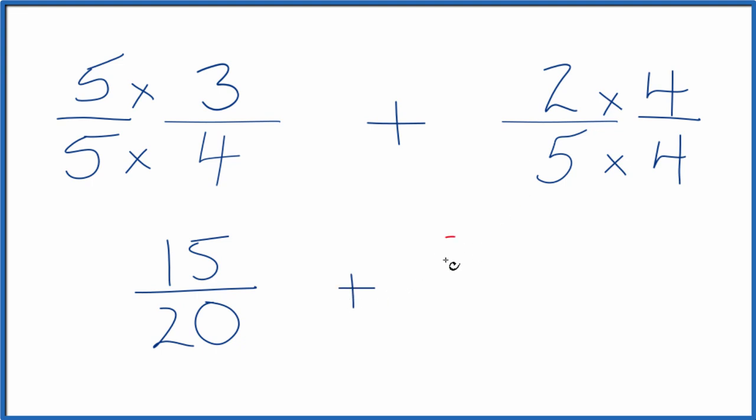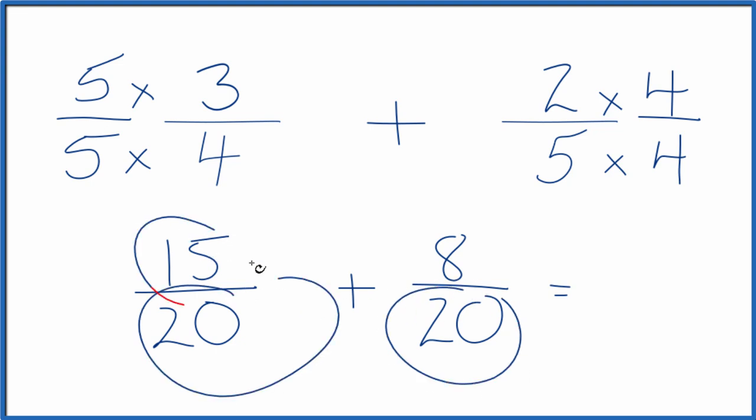And over here, 2 times 4 is 8. 5 times 4 is 20. We have the same denominator. We could just add the numerators. So 15 plus 8, that's 23. And we just bring the 20 across.